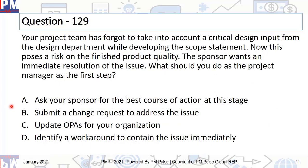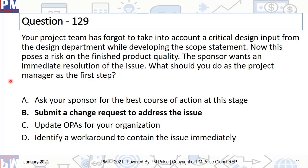Let's move on to question 139. The answer is to submit a change request. A change request can come because of any reason — it does not always have to come from the customer. It can come from forgetting something, so your team itself can actually put in the change request. The moment you come to know about any discrepancy, the first thing you need to do is submit a change request. We missed something — then it goes to the CCB, and they will figure out whether we have to do it right now, and take a decision.